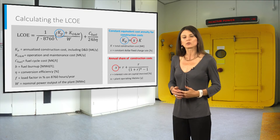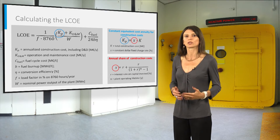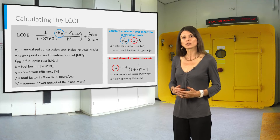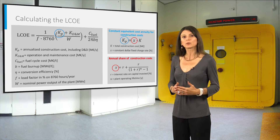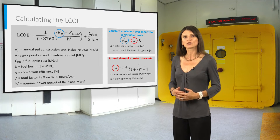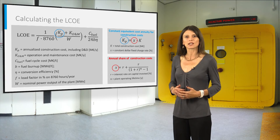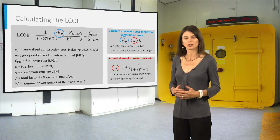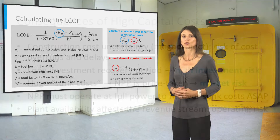A constant equivalent cost annuity is calculated and divided by an average annual electricity output in MWh. The LCOE can be viewed as the minimum constant electricity price that covers all the costs and breaks even the project. In this case, the cost of capital and the decontamination and decommissioning are accounted in the construction cost component.